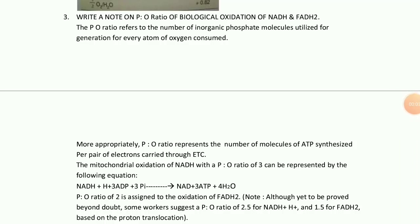Third question: write a note on P/O ratio of biological oxidation of NADH and FADH2. The P/O ratio refers to the number of inorganic phosphate molecules utilized for production of ATP for every oxygen atom consumption.